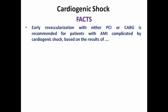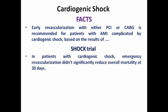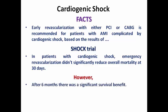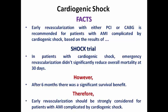Now let's move to cardiogenic shock. Early revascularization with either PCI or CABG is recommended in any patient with acute MI complicated by cardiogenic shock, based on the famous SHOCK trial. That trial showed that emergency revascularization did not significantly reduce overall mortality at 30 days, but it did show a significant survival benefit after six months. So while you may not see immediate improvement, long-term survival is better, and therefore early revascularization should be considered.